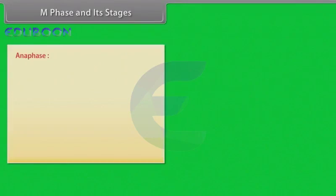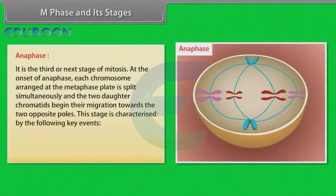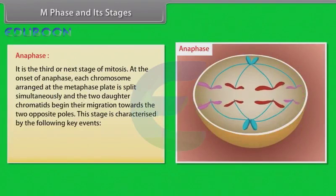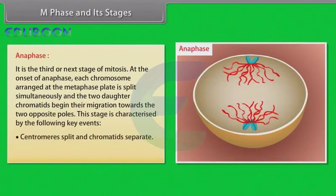The next stage of mitosis is anaphase stage. It is the third or next stage of mitosis. At the onset of anaphase, each chromosome arranged at the metaphase plate is split simultaneously and the two daughter chromatids begin their migration towards the two opposite poles. This stage is characterized by the following key events: centromere splits and chromatids separate, chromatids move to opposite poles.